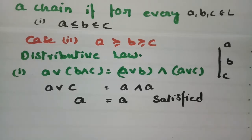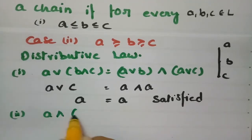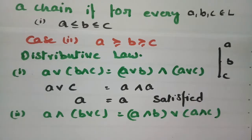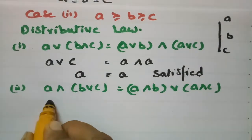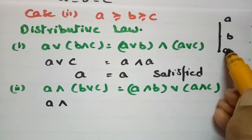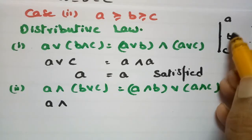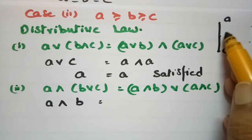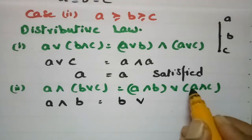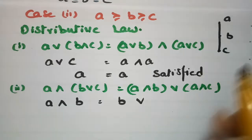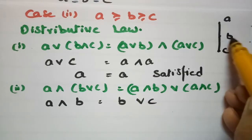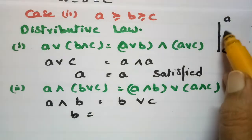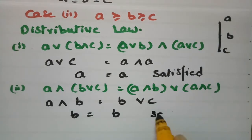The second distributive property for Case 2: A ∧ (B ∨ C) = (A ∧ B) ∨ (A ∧ C). From the diagram, B ∨ C: join is the least upper bound, and among B and C, B is the upper bound, so B ∨ C = B. Then A ∧ B: meet is the greatest lower bound, so among A and B, B is the lower bound, giving A ∧ B = B. And A ∧ C: C is the lower bound. So (A ∧ B) ∨ (A ∧ C) = B ∨ C = B. Thus B = B — the second condition is satisfied.